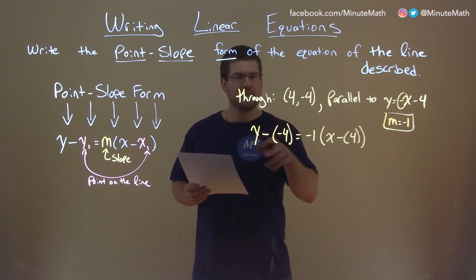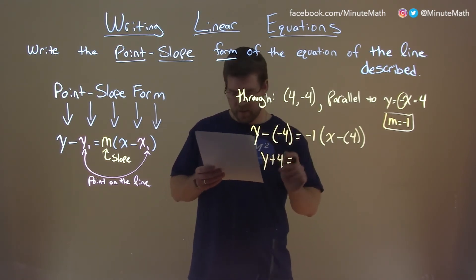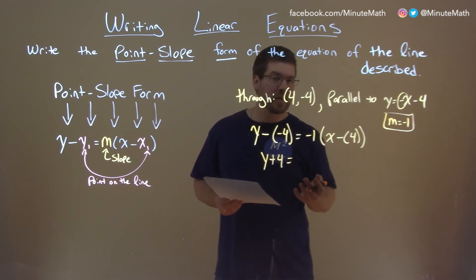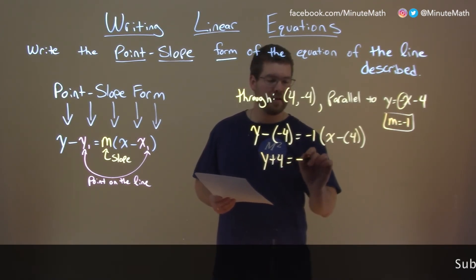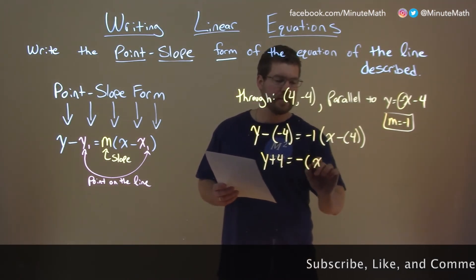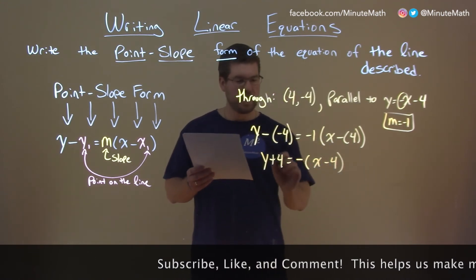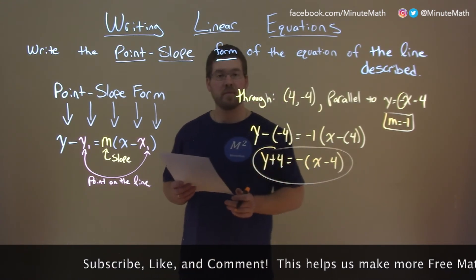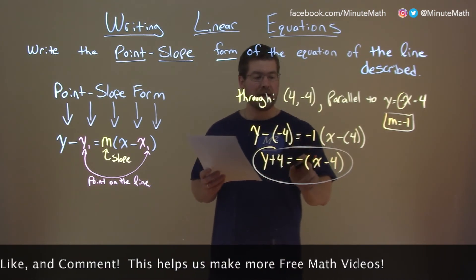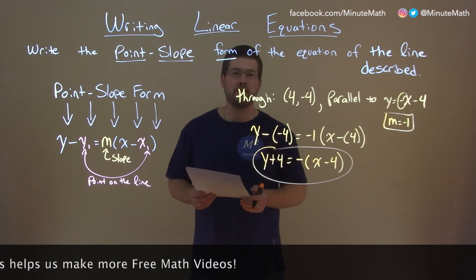y minus negative 4 is adding a positive 4, so we have y plus 4 here. With negative 1 and multiplication, we never really write it — we can just leave the negative sign out here and put the parentheses: x minus 4. And there we have our answer in point-slope form: y plus 4 equals negative (x minus 4).